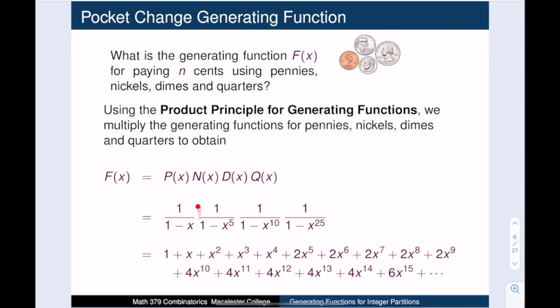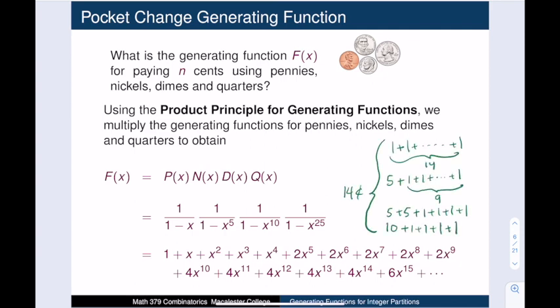By the product principle, the generating function for paying with pocket change is p × n × d × q. In other words, it is 1/(1−x) · 1/(1−x⁵) · 1/(1−x¹⁰) · 1/(1−x²⁵). To find actual values for various n, we expand the power series; the coefficient of xⁿ is the number of ways to pay n cents. For example, there are four ways to pay 14 cents: 14 pennies; a nickel and 9 pennies; 2 nickels and 4 pennies; or a dime and 4 pennies. The coefficient of x¹⁴ is indeed 4.